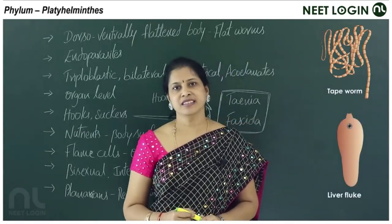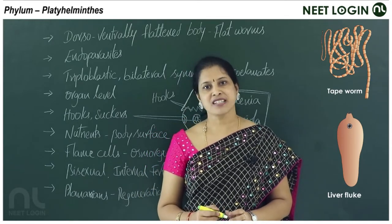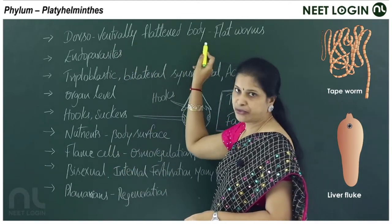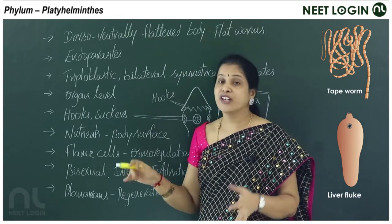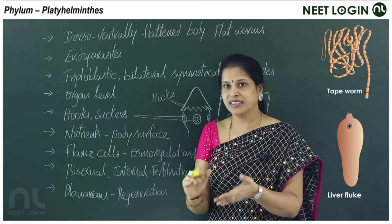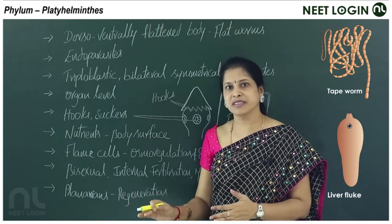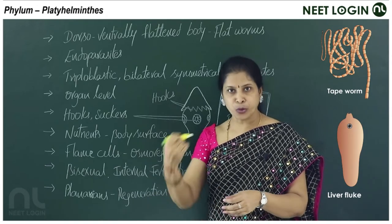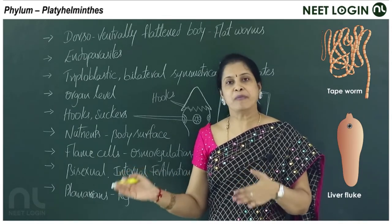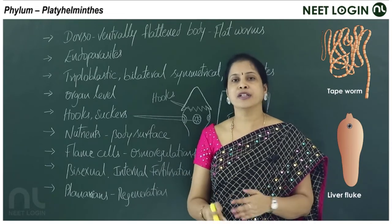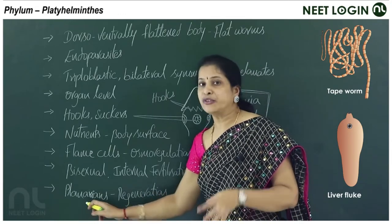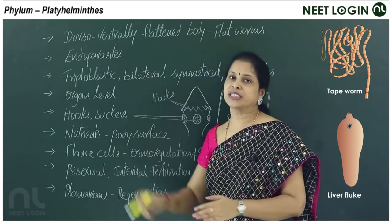The next phylum is Platyhelminthes. 'Platy' means flat, 'helminthes' means worms — these are flatworms with a dorsoventrally flattened body, shaped like a ribbon or leaf. Most platyhelminthes are endoparasites living inside hosts, many parasitizing humans. Some free-living forms like planarians also exist.